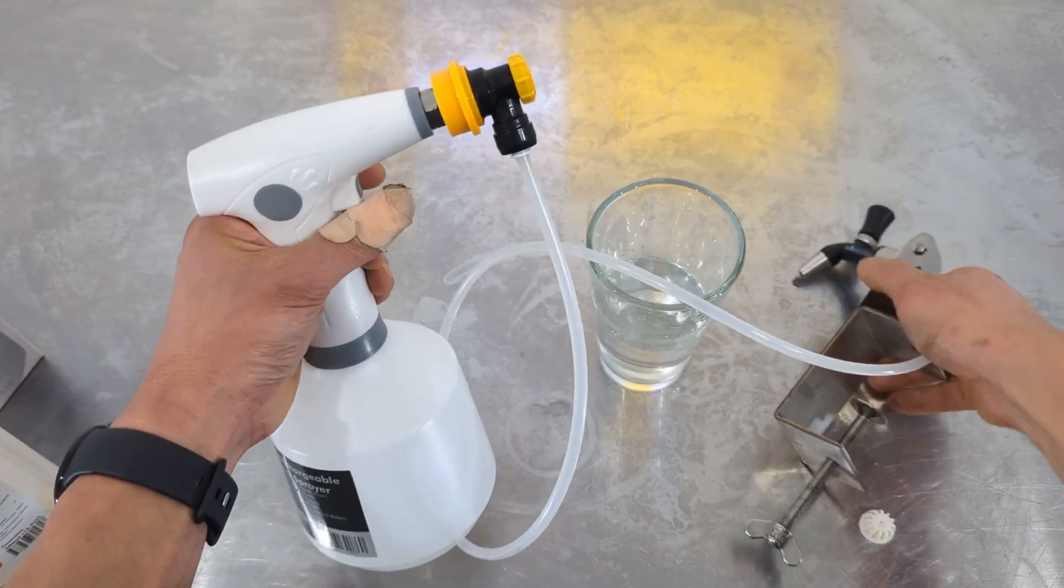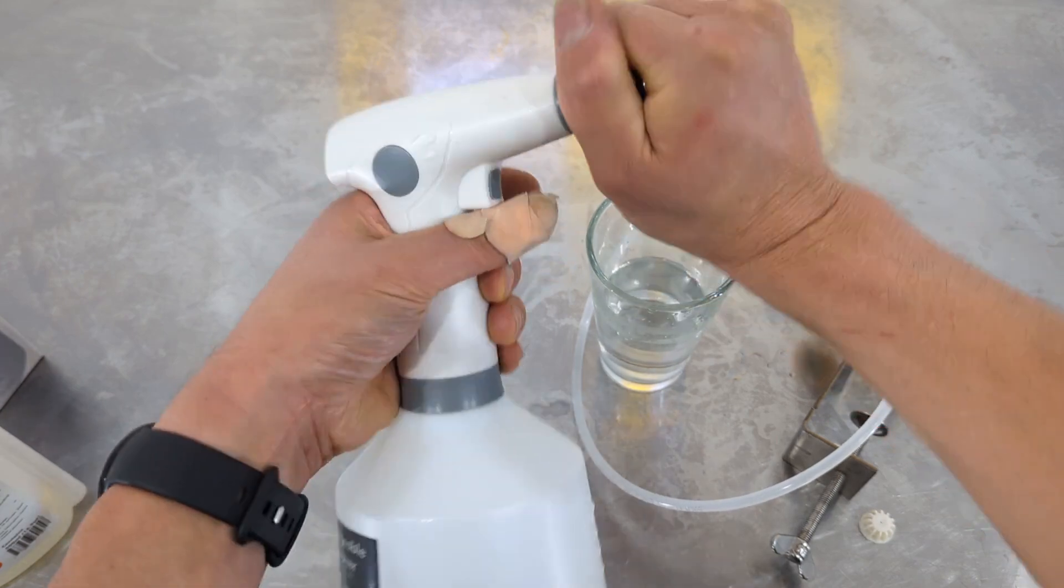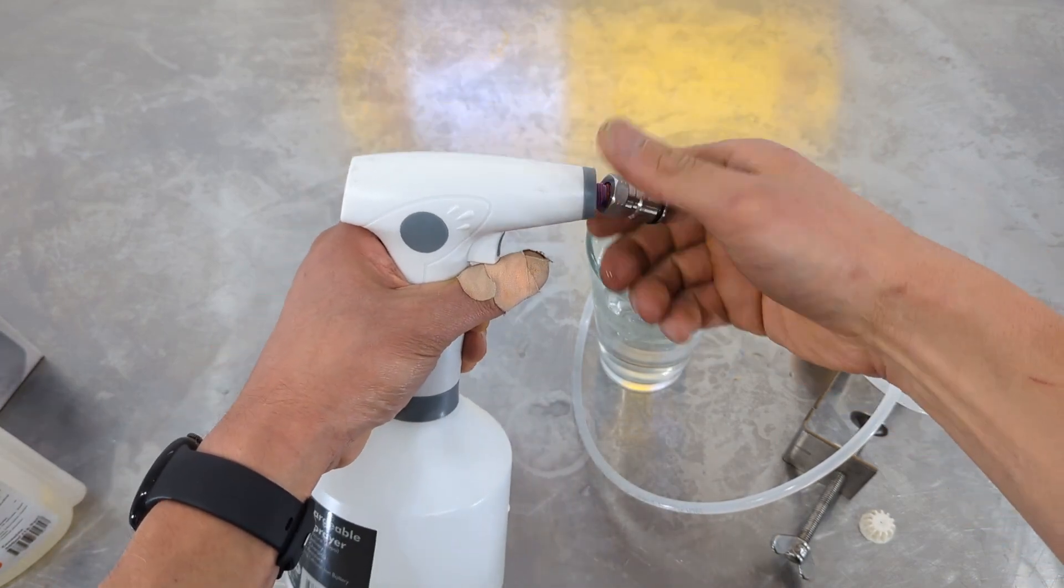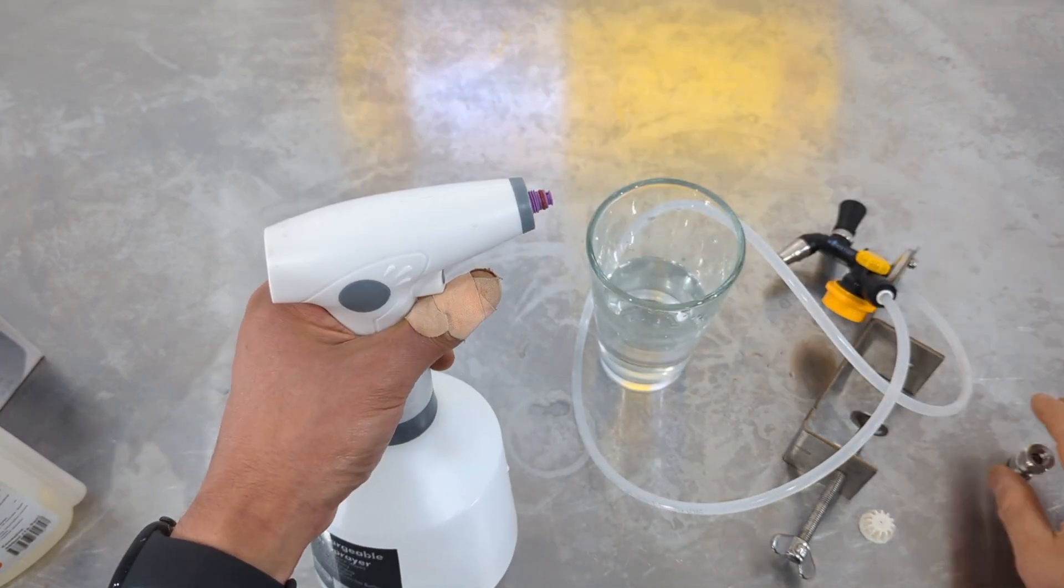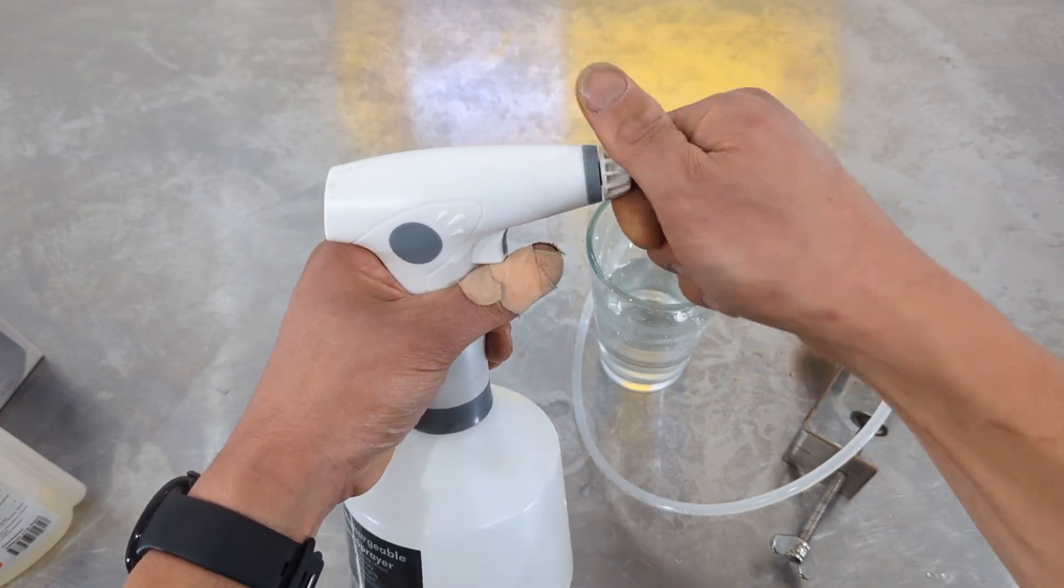Anyway, that's it and then if you convert it back just take that off, take this guy off the front of the gun like that and then you can turn it back into a sprayer normally just by screwing that back on like so.